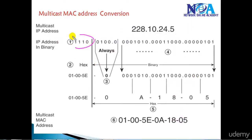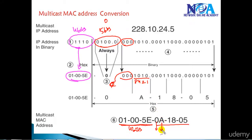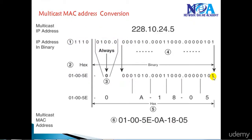Looking at the conversion: the first part is written as 01005E based on the first four bits. The next five bits are zeros. Then taking the remaining portions: the five-bit zero section gives 0; the next four bits 8-4-2-1 give 8 plus 2 = 10, which is A in hex; the next four bits 0001 give 1; the next four bits 1000 give 8; the next four bits give 0; and the last four bits give 5. This conversion is done automatically — we just need to understand the representation.